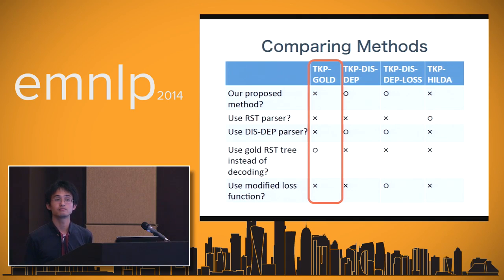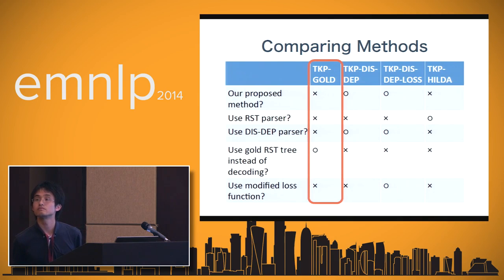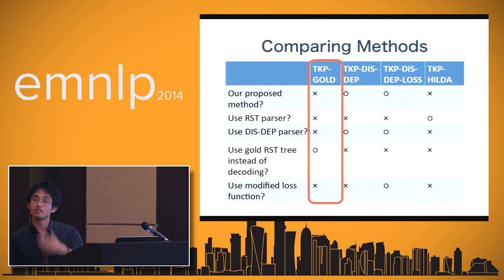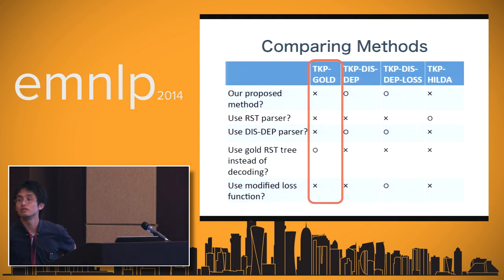Another audience member asked a more general question: looking at the previous talk on sentence compression and this talk on text summarization, what can each task learn from the other, or are they completely independent? The speaker acknowledged that both involve some form of compression and tree structures, though not the same trees, and suggested that incorporating sentence compression methods might be possible, though the tasks are quite different algorithmically.